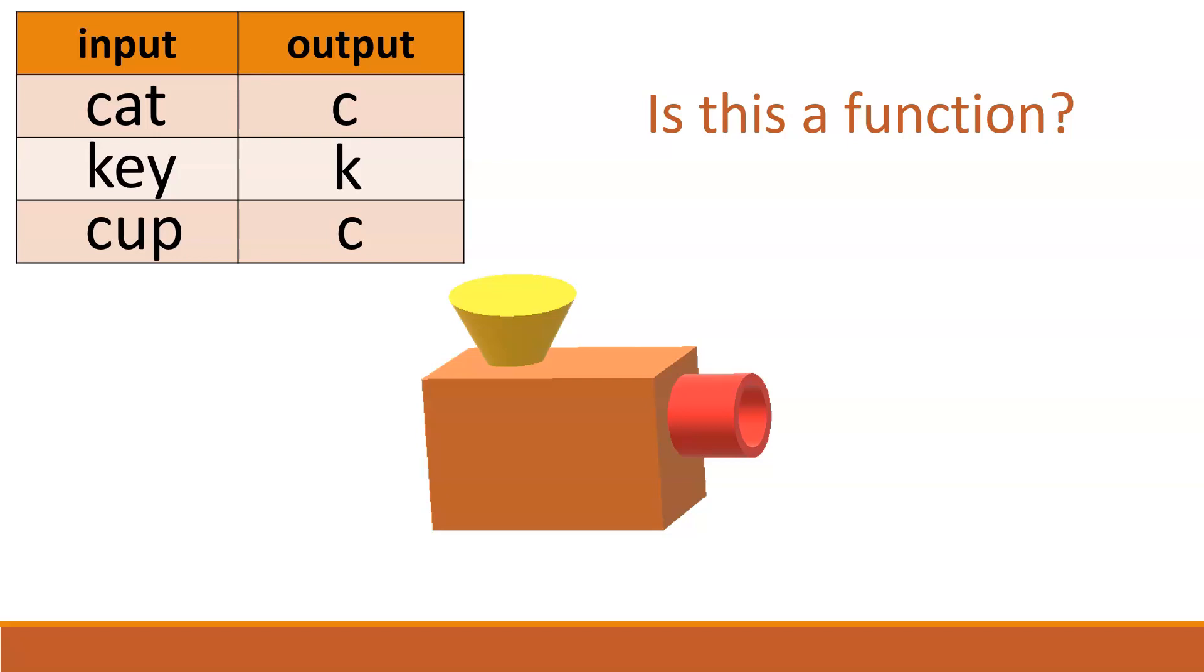To be a function, every input has to have only one output, and that is the case here. Cat only gave us an output of c, nothing else. And cup only gave us an output of c, nothing else. So even though we have two different inputs that gave us the same output, this is a function.